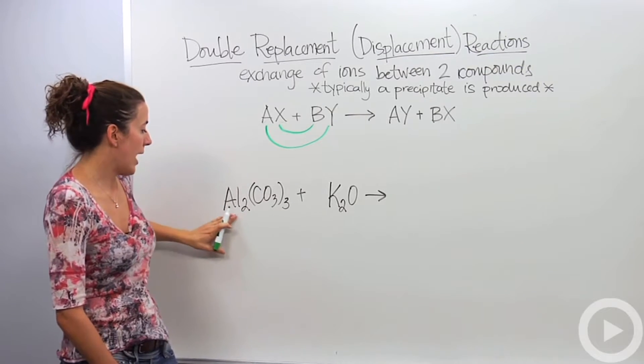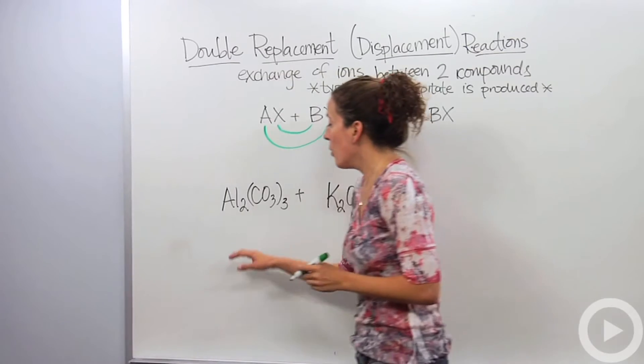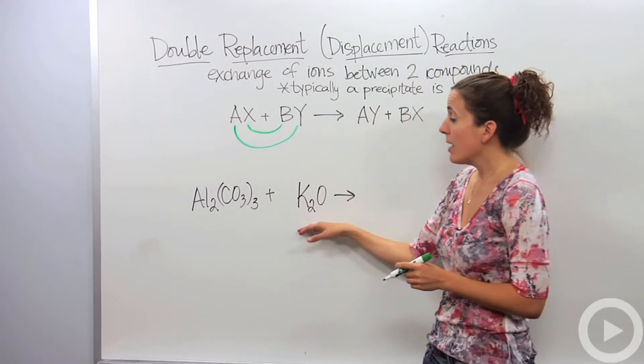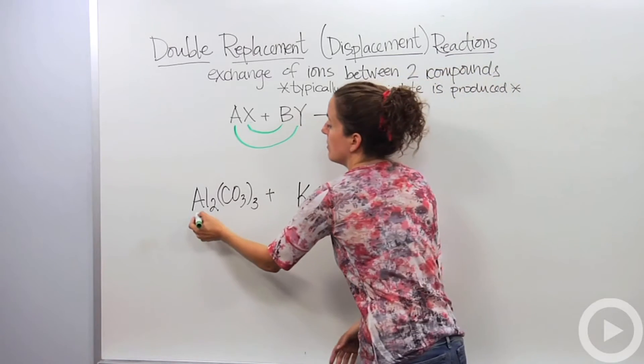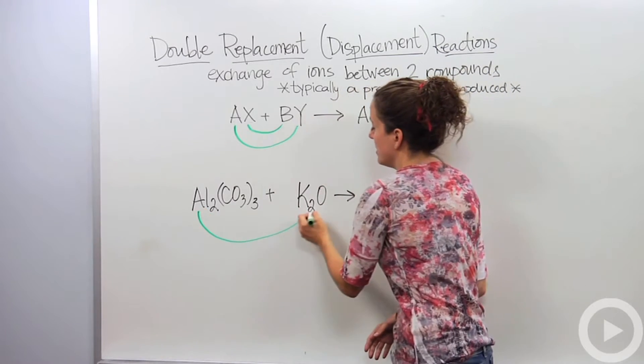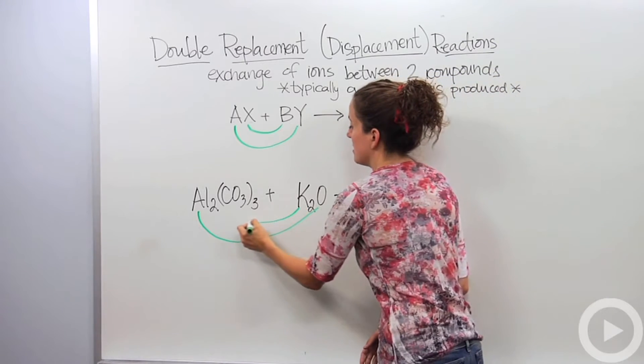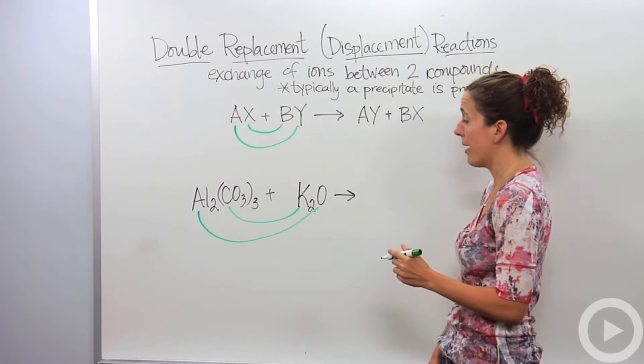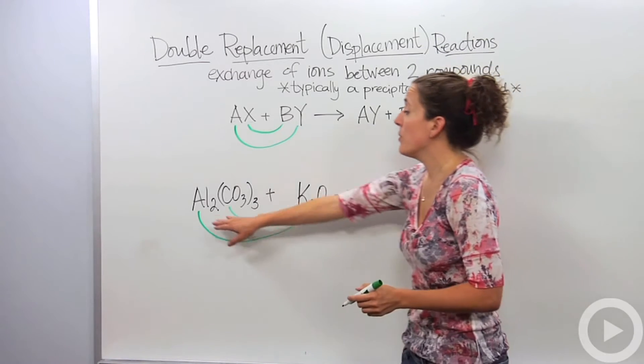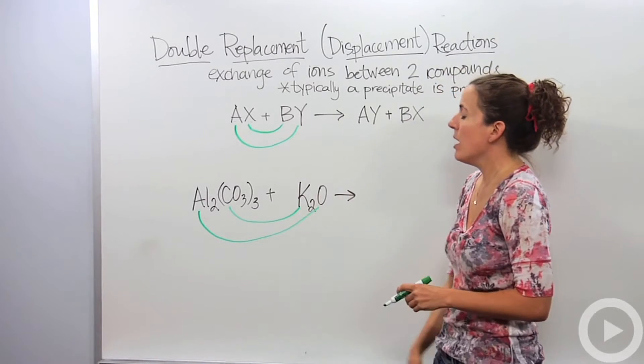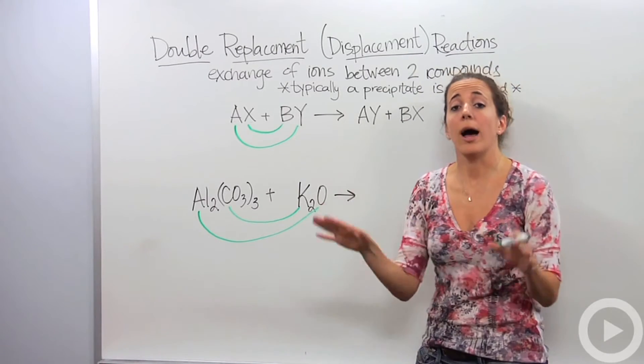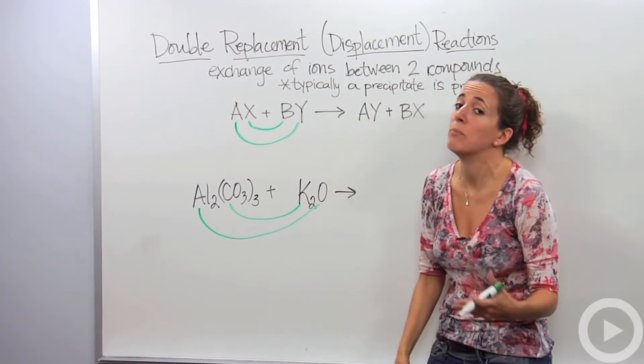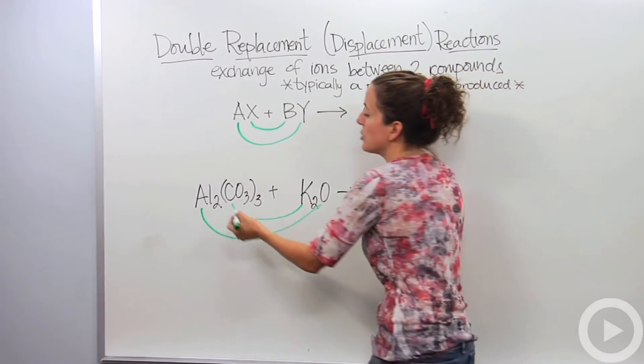So let's look at an actual double displacement reaction. We have two ionic compounds that come together, aluminum carbonate and potassium oxide. And what they're going to do, the metal is now going to bond with this non-metal, and this metal is going to replace, is going to go with that non-metal. Polyatomic ions are going to act as non-metals. So we have these subscripts at the bottom, 2, 3, and this 2, we're actually going to ignore them for now. Do not use those when you're actually making your products. Just ignore them, we'll deal with them when we balance the equation.